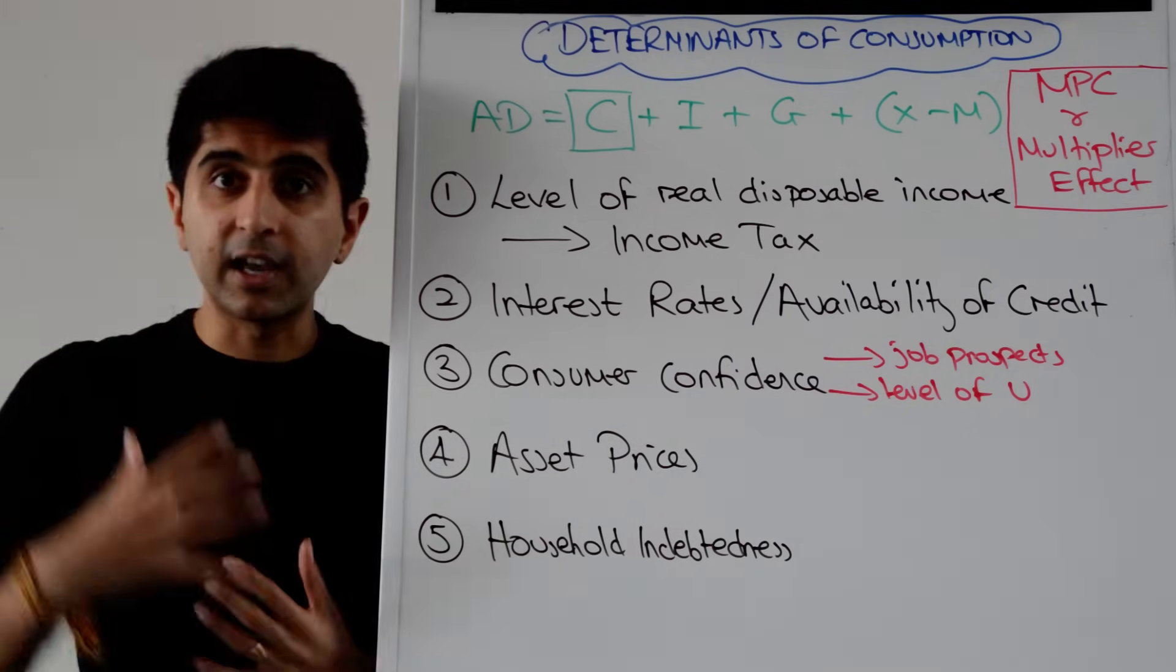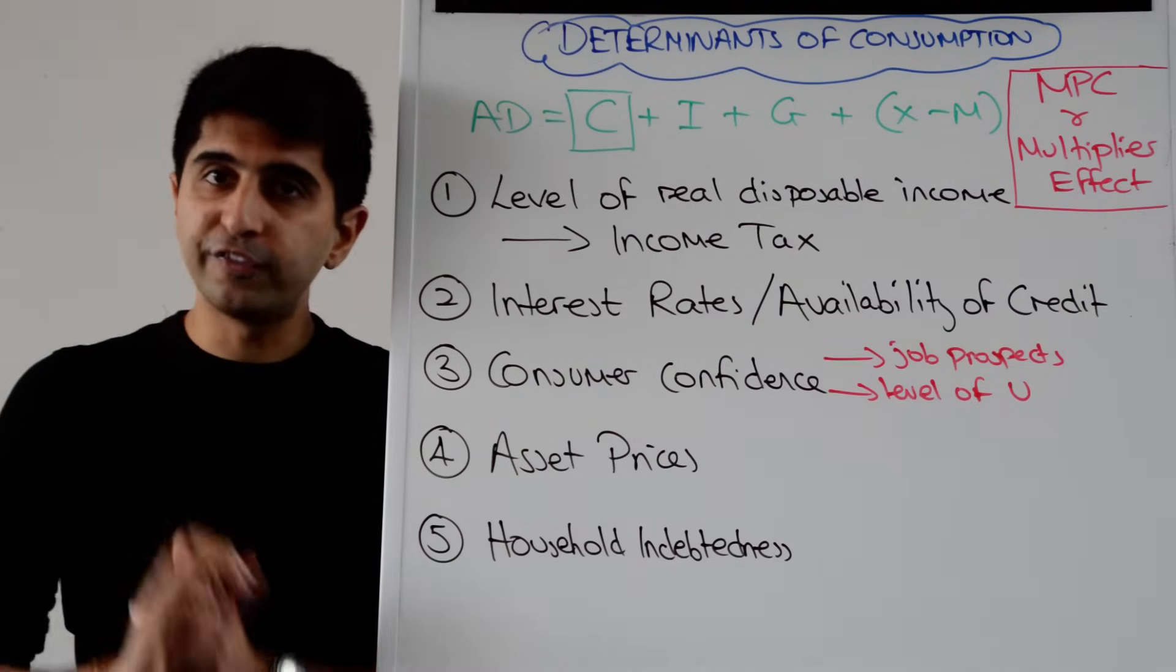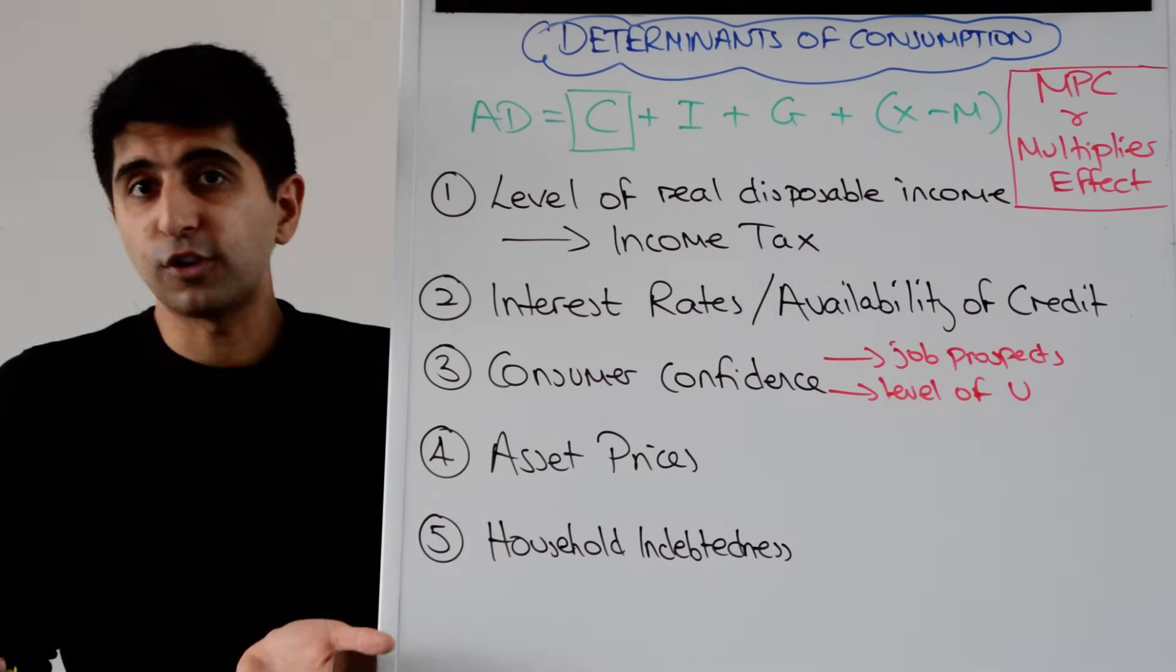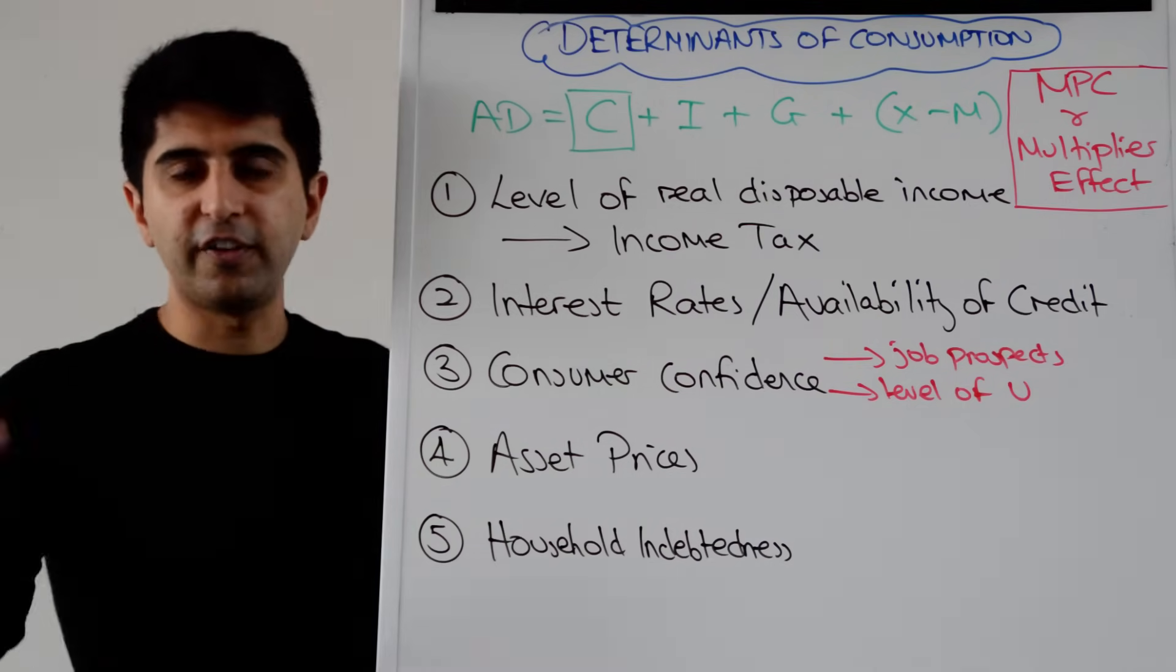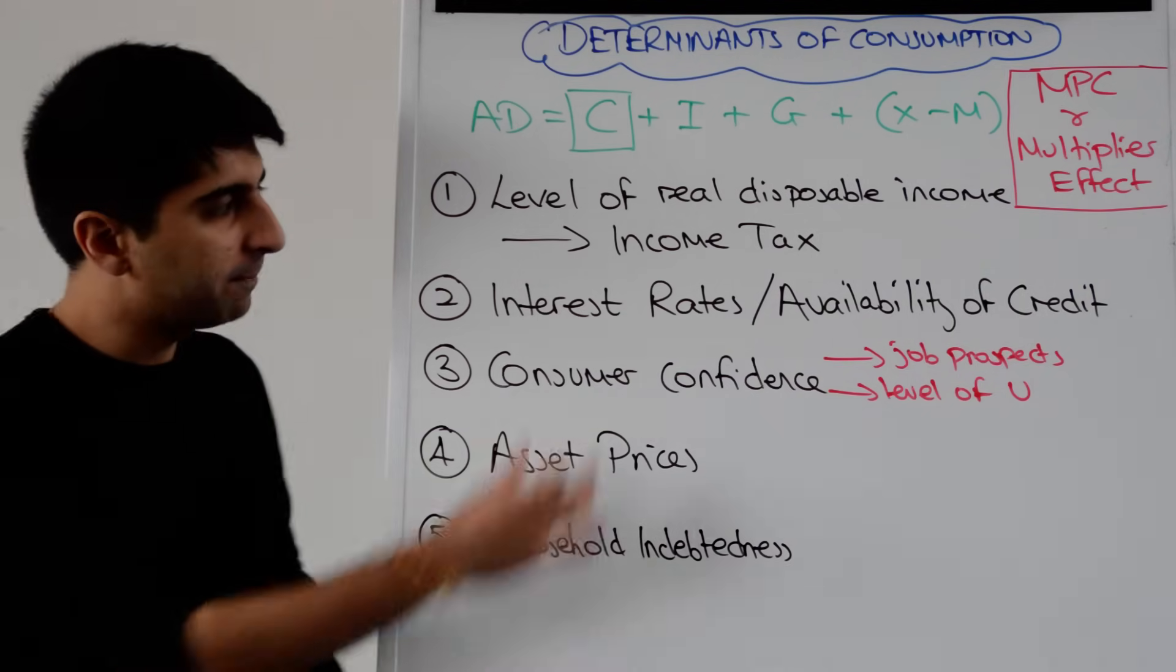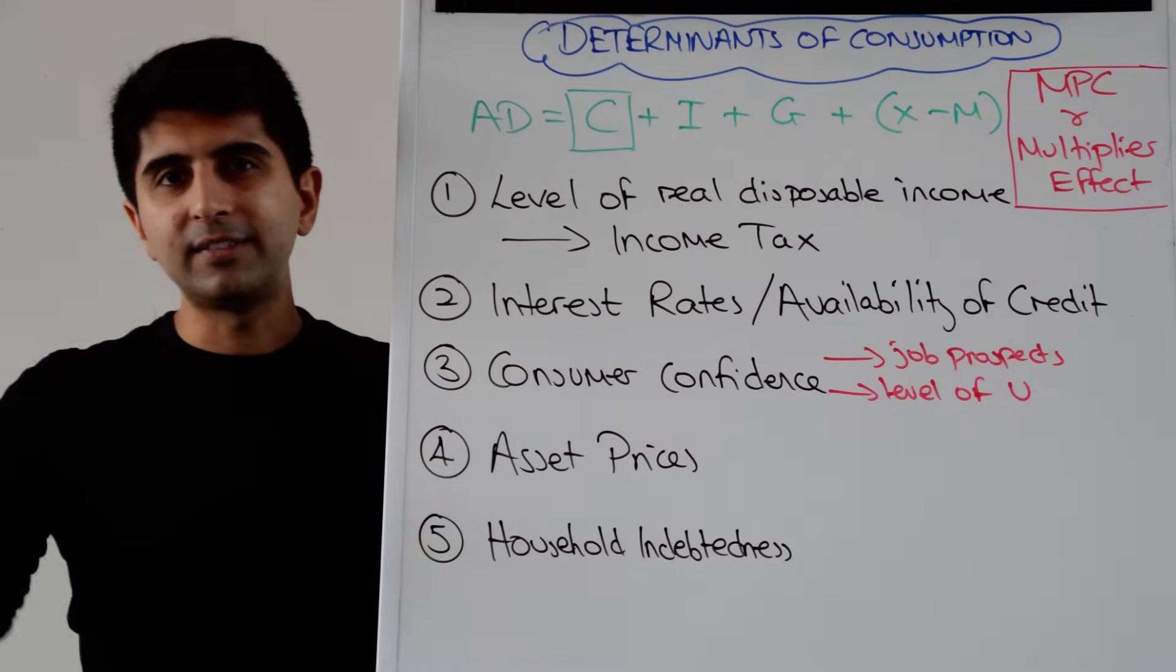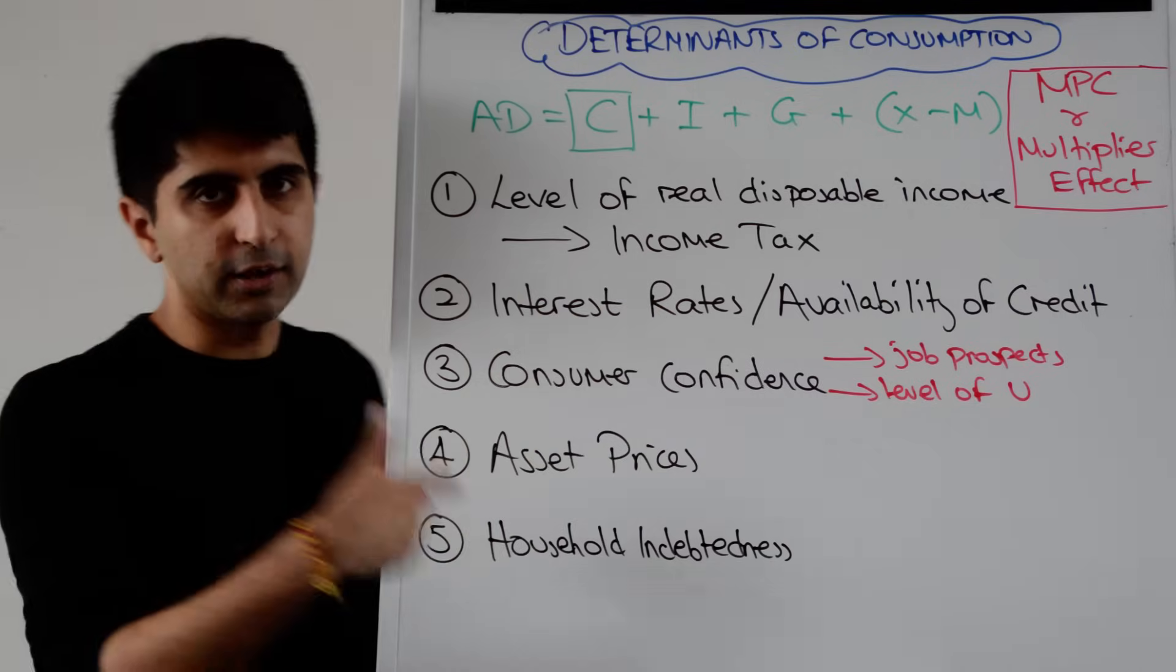If interest rates are cut, for example, then the cost of borrowing falls and the rate of return on saving falls. If the cost of borrowing falls then that increases the incentive for consumers to go and borrow money because it's cheaper to do so now and to spend that money on expensive items like cars, houses, furniture, jewellery for example and that will increase consumption in the economy. If interest rates are cut the rate of return on saving decreases so that reduces the incentive to save and instead any income that's generated might go into consumption as a result and that increases C.